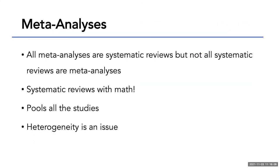A meta-analysis is actually at a higher level than a systematic review, but it's best to understand systematic reviews first, because you cannot have a meta-analysis without one — you need all of those steps we just went through. Please don't tell any biostatisticians I wrote this, but they're basically systematic reviews with math and statistics, where you're pooling all of the studies to try to compare them as if they are one study. You tend to see the word 'heterogeneity' thrown around a lot — meaning, are the studies too different to compare? Sometimes a team may want to do a meta-analysis but can't because the studies are just too different.